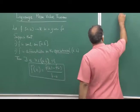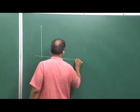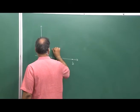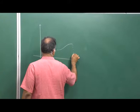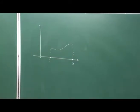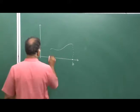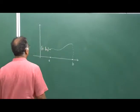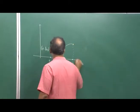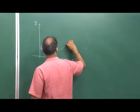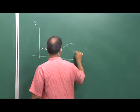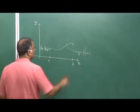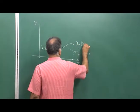If I have a function and I draw its graph from a to b — say this is a continuous and nice function — then looking at a point on the graph, this is (a, f(a)). Looking at another point on the graph, since this function is y = f(x), at the other end it is (b, f(b)).